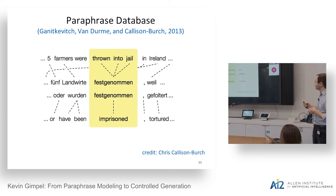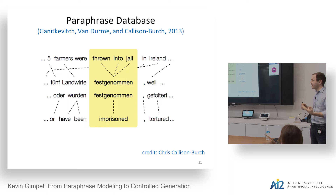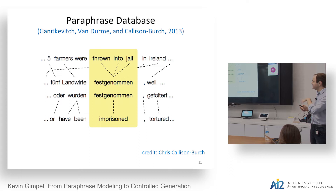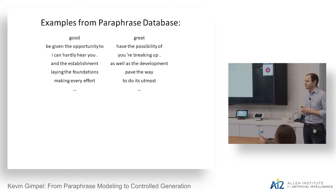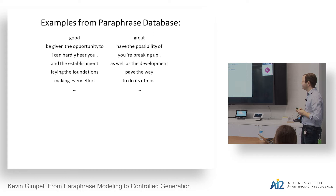We started out working with the Paraphrase Database, a well-known resource developed about five or six years ago. It goes back to Chris Callison-Burch's thesis: if you have parallel text in two languages, you can pivot over the non-English language and figure out that 'imprisoned' is a paraphrase of 'thrown into jail.' Done at scale across hundreds of millions of sentence pairs, you end up with a dataset of hundreds of millions of phrase pairs.